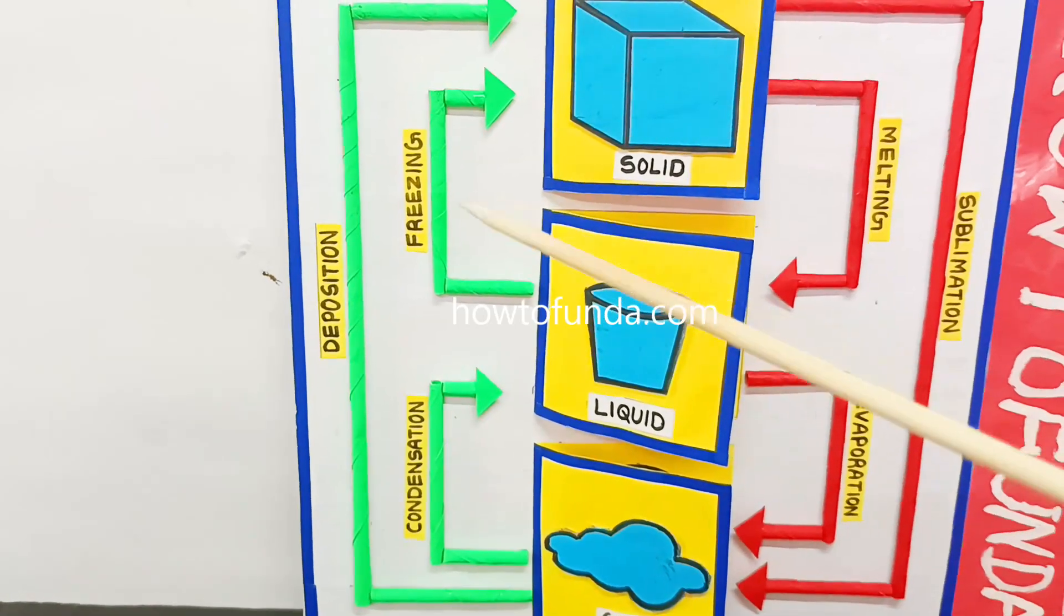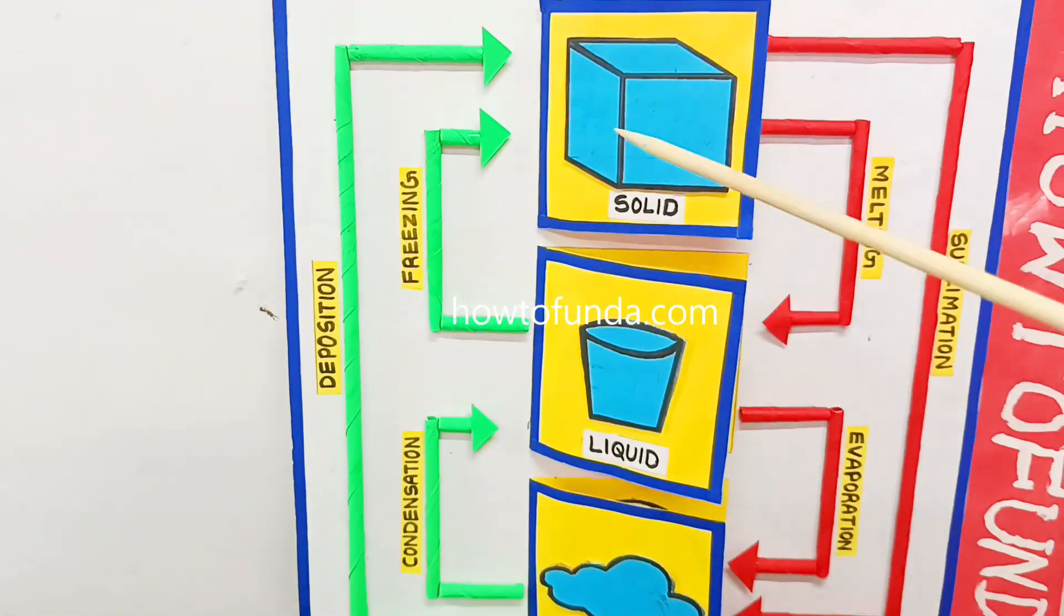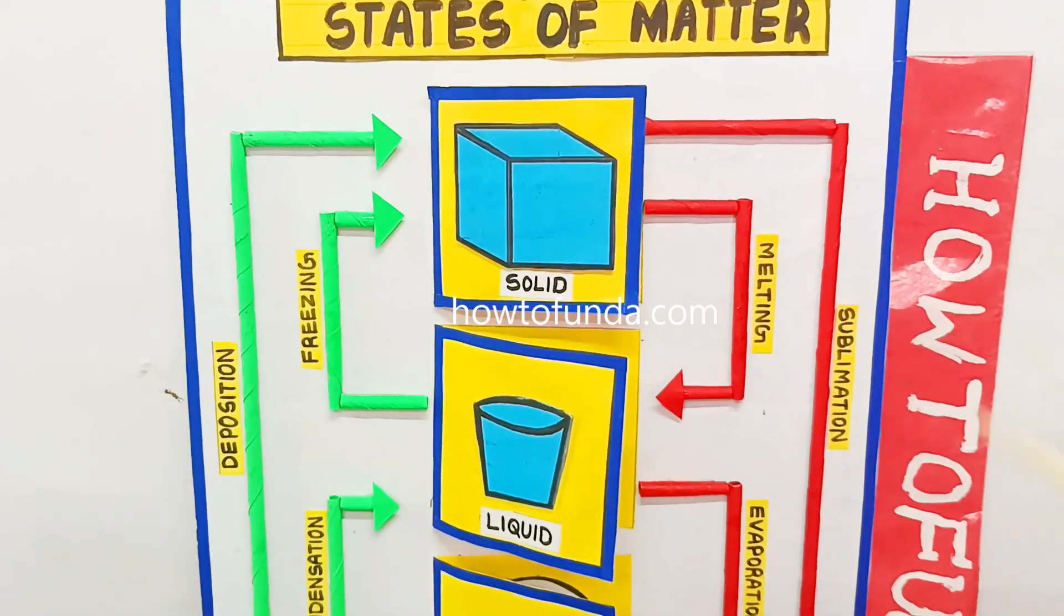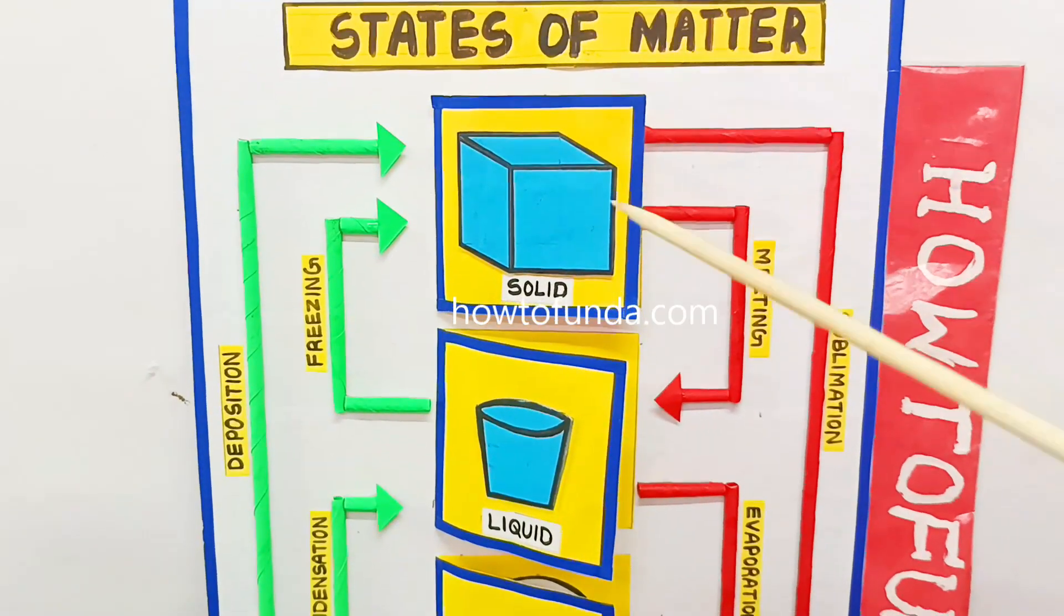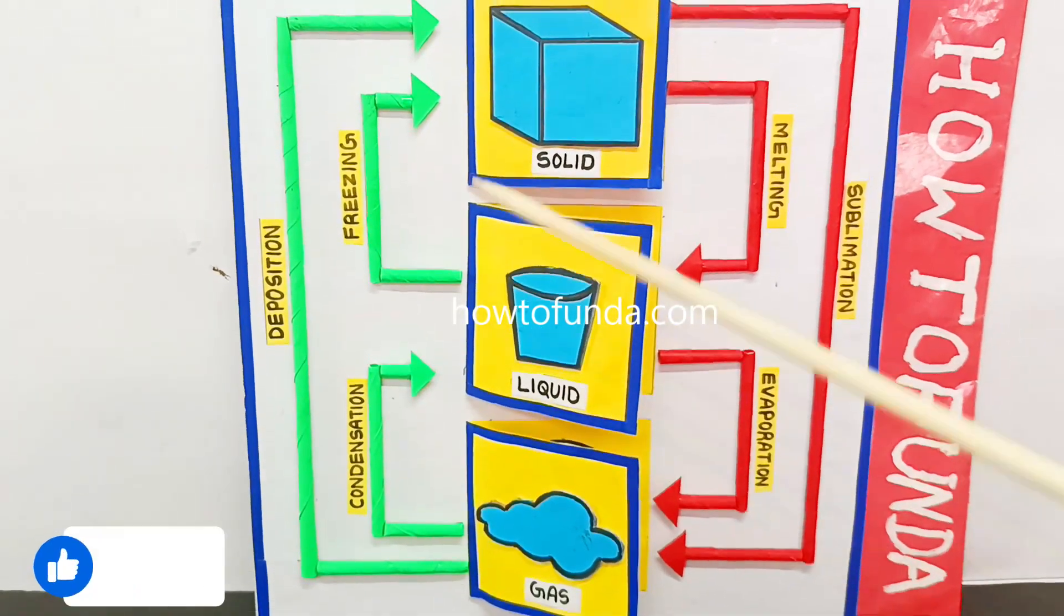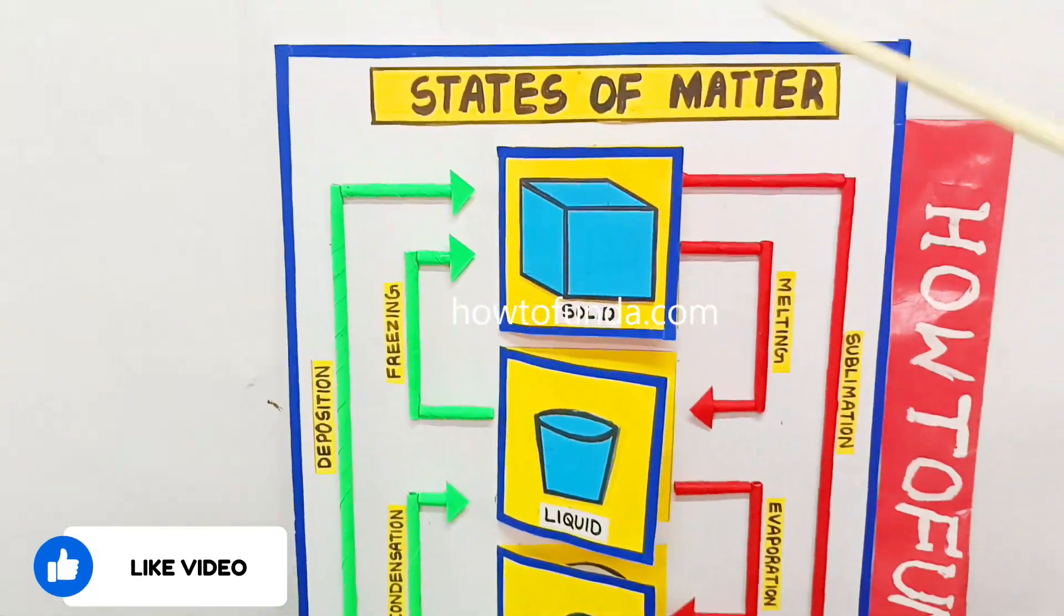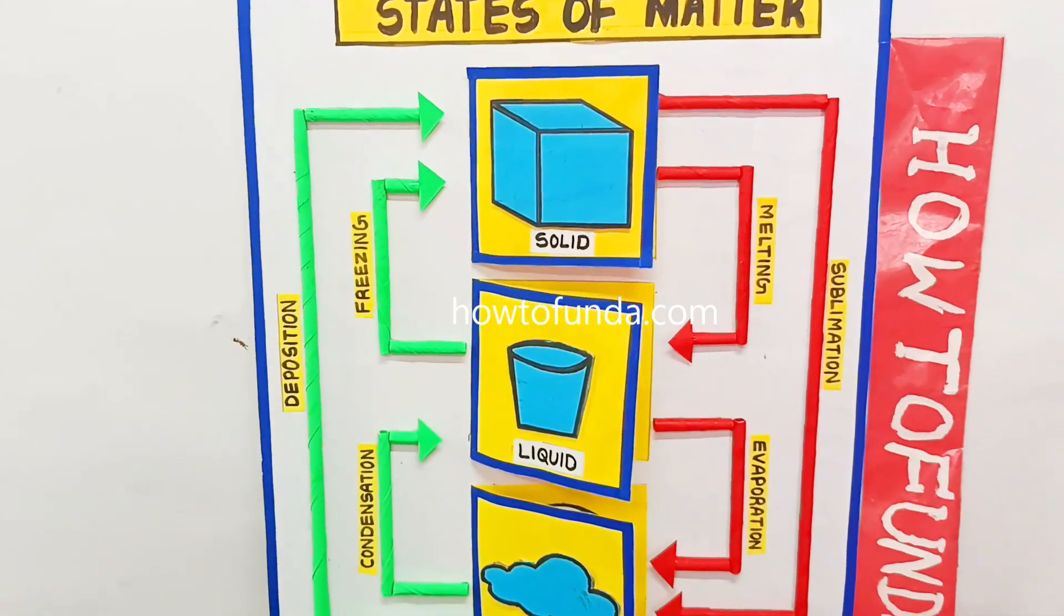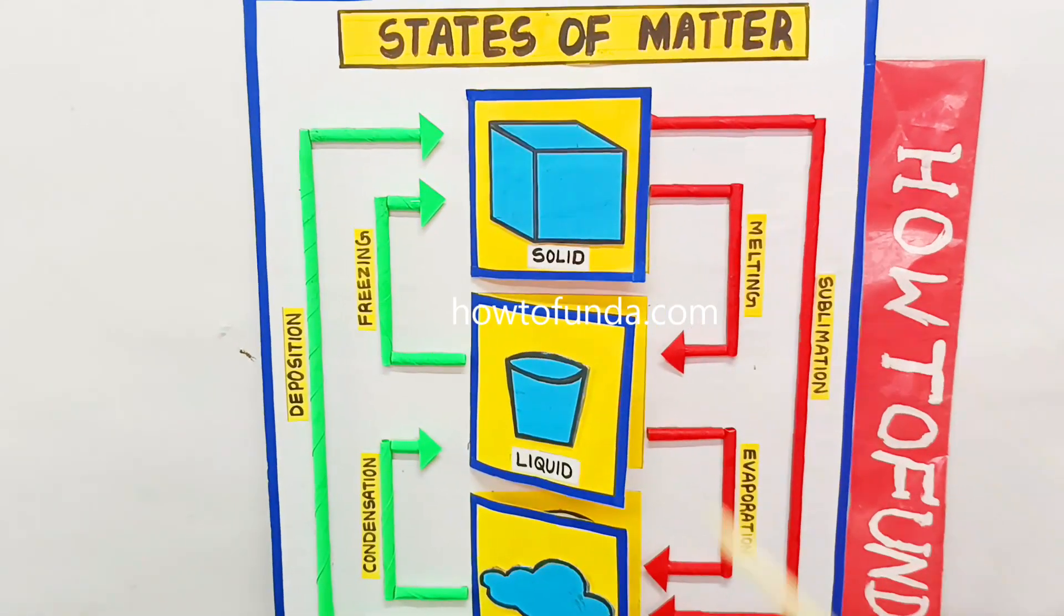From liquid to solid, if you freeze - let's say if you put the water into your freezer, it becomes ice cube again. This is how the life cycle of different matters from solid to liquid and liquid to gas, again from gas to liquid, from liquid to solid - this is how the entire transition will happen from different states to another state.